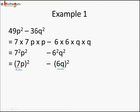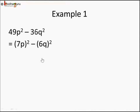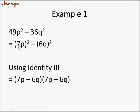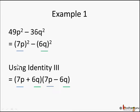Remember, a can be just a variable, a constant, or a combination like 7p. Here 7p is a and 6q is b. Using Identity 3 we write a² - b² = (a + b)(a - b), so (7p)² - (6q)² becomes (7p + 6q)(7p - 6q). Don't forget to write the brackets, otherwise it will be a different expression.